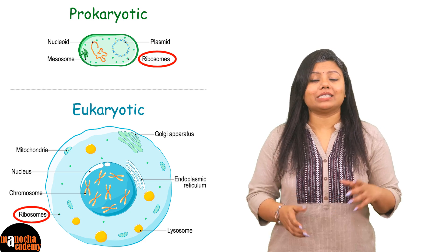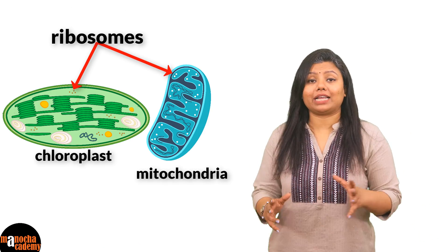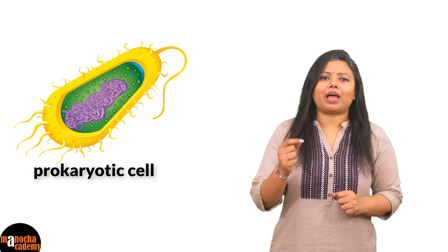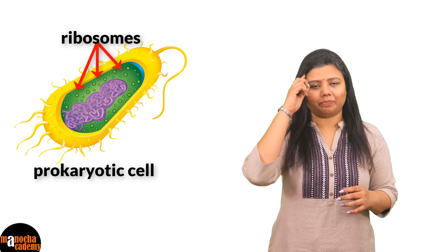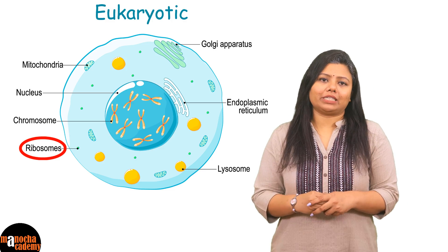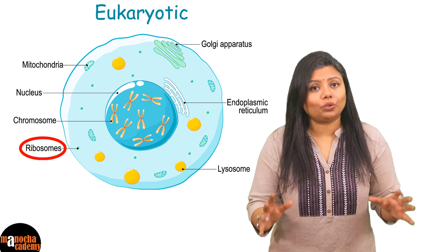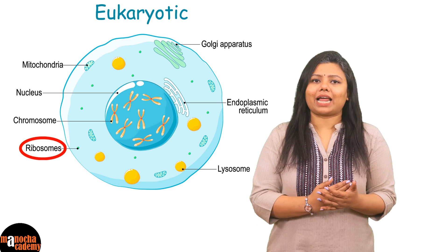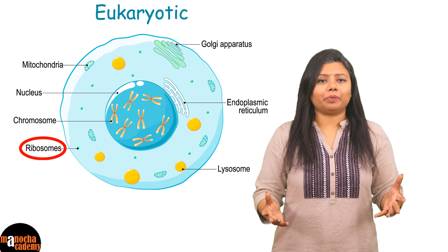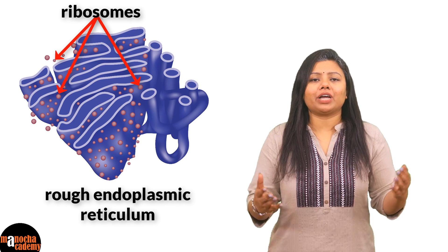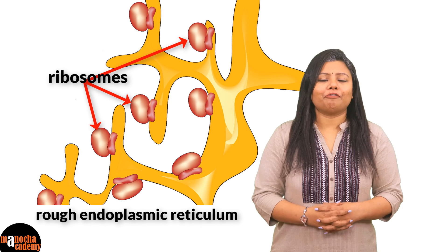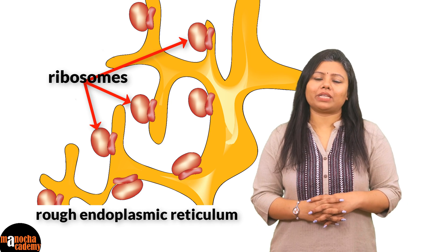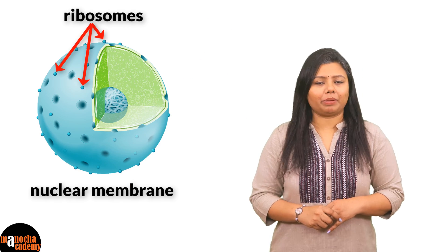Ribosomes are also present inside organelles like chloroplasts and mitochondria. Inside the prokaryotic cell, ribosomes float like granules in the cytoplasm. In eukaryotic cells, ribosomes are not only present floating as granules in the cytoplasm, but they are also attached to other cell organelles — for example, attached to endoplasmic reticulum membranes, forming rough endoplasmic reticulum, and also attached to the surface of the nuclear membrane.